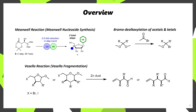To provide an overview: first we'll be discussing the Meanwell reaction, also known as the Meanwell nucleoside synthesis, where a dioxinone-derived acetal can be converted into a wide range of non-natural nucleosides. Then we'll be discussing the use of acetyl bromide to convert methyl acetals and ketals into the corresponding alpha-bromomethyl ethers. And finally, we'll be discussing the Vasella reaction, also known as Vasella fragmentation, where zinc dust and sonication are used to convert a bromide or iodide to the corresponding alkene-containing aldehydes through the ring opening of a pyranose or a furanose.